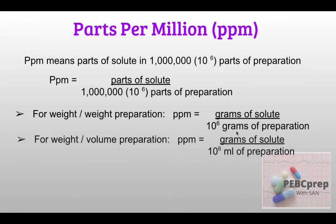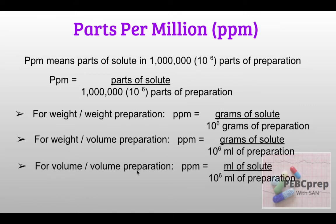For a weight-by-volume preparation, PPM = grams of solute divided by 10^6 milliliters of preparation — remember grams and milliliters. For a volume-by-volume preparation, PPM = milliliters of solute divided by 10^6 milliliters of preparation. If liters are used, keep liters in the denominator. Concentrate on units — if you get these types of questions in an exam, the units remain the same throughout.